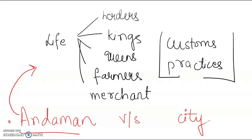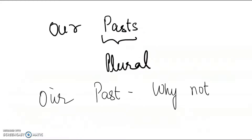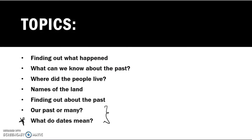Look at another difference. If I talk about the life of kings and queens, they generally used to keep a record of their victories and lifestyle in one form or another, maybe inscriptions and so on. But if I talk about the lifestyle of ordinary people, there's no record of the same — it's very difficult to find out. That is why we focus on 'our pasts,' not 'our past.' We never had the same past. You and I also do not have the same past. Our pasts differ.